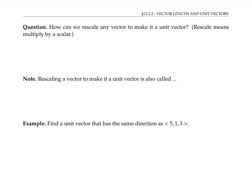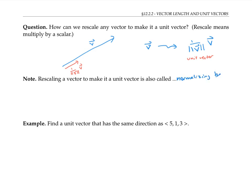To rescale any vector v to make it a unit vector, we just multiply v by one over the length of v. This process of rescaling a vector to make it a unit vector is also called normalizing the vector. Please pause the video for a moment to find a unit vector that has the same direction as the vector with components five, one, three.